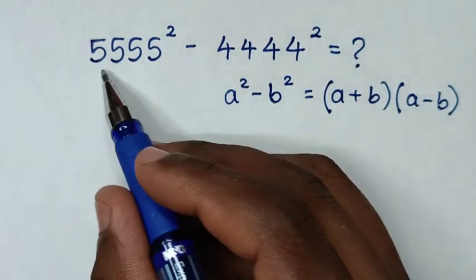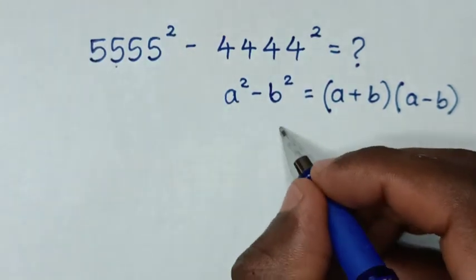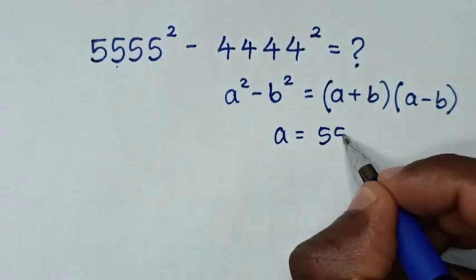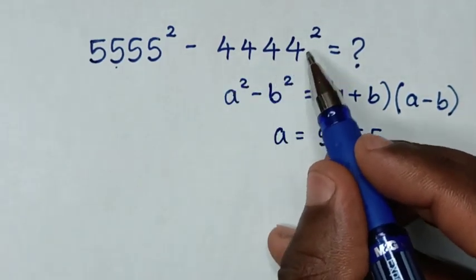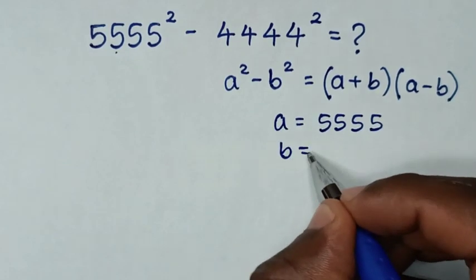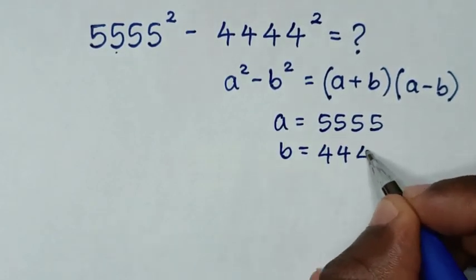When you compare a² with 5555², then a equals 5555. And when you compare b² with 4444², then b equals 4444.